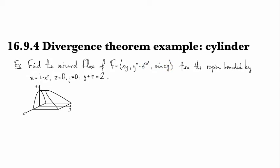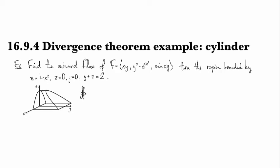The region we're going to be looking at is bounded by z equals 1 minus x squared, the z equals zero plane, the y equals zero plane, and the slanted plane x plus y equals two, which gives us this portion here. We're asked to find the flux over the boundary of this region E, the normal component of F with respect to S.